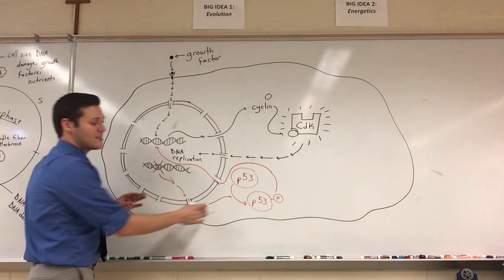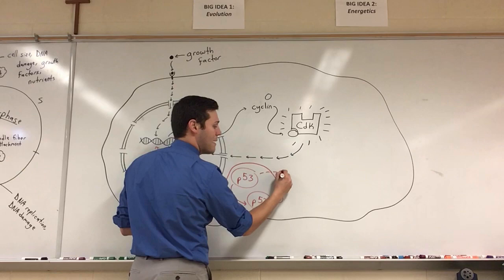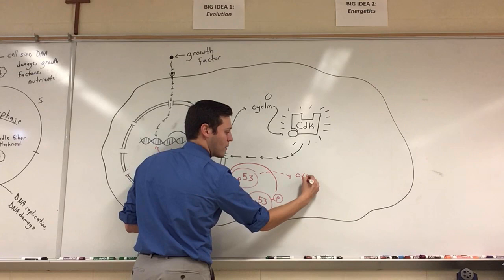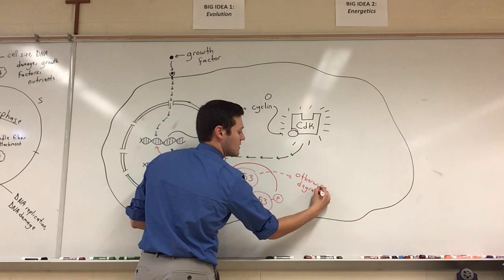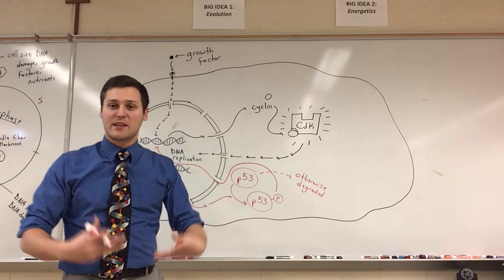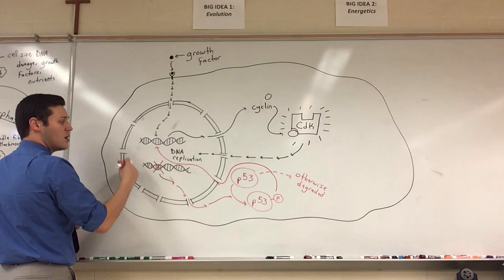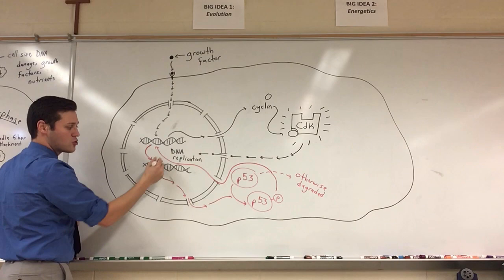So let's say that this P53 gets phosphorylated. And by the way, P53 is normally found in low amounts. So if it's not phosphorylated, it gets degraded. So I'll put otherwise degraded. But when it is phosphorylated, it doesn't get degraded, so it starts to build up in the cell. And what it does is it serves as a transcription factor, which allows the expression of some other things. One of those things tries to repair that DNA.